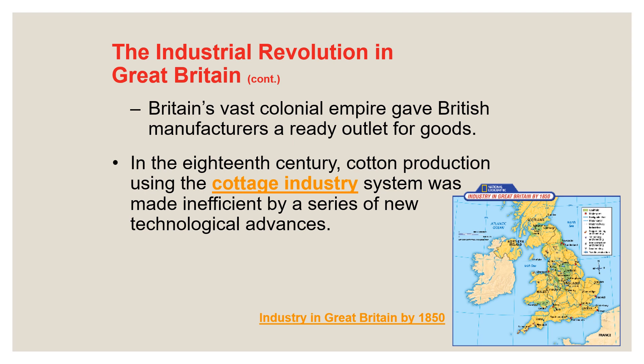Ultimately, this gave way to the Industrial Revolution in Great Britain first. You can see on this map that industry in Great Britain by 1850 was massive — lots of those little dots are manufacturing towns that have popped up all over England. England was about a century ahead of the rest of Europe when it came to industrialization.